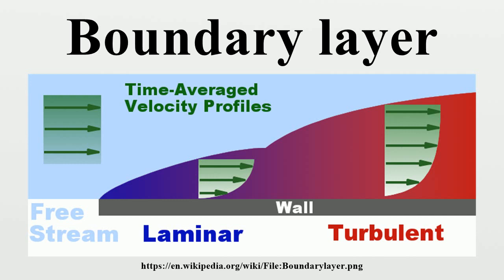The Blasius solution for the laminar velocity profile in the boundary layer above a semi-infinite plate can be easily extended to describe thermal and concentration boundary layers for heat and mass transfer respectively, using a similarly derived energy and mass balance. For the momentum balance, kinematic viscosity can be considered to be the momentum diffusivity. In the energy balance, this is replaced by thermal diffusivity, and by mass diffusivity in the mass balance. In thermal diffusivity of a substance, α is its thermal conductivity divided by its density and heat capacity. For Prandtl number and Schmidt number equal to 1, the Blasius solution applies directly.